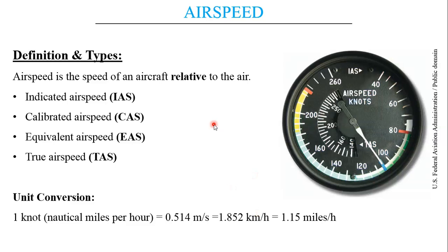So what is airspeed? Speed is a dimensional quantity — it is a scalar unit of velocity. That is, speed has a unit such as meters per second but it doesn't have a direction, so it is termed a scalar quantity. Airspeed is the speed of the aircraft relative to air. There are four different types of airspeeds: indicated airspeed, calibrated airspeed, equivalent airspeed, and true airspeed.